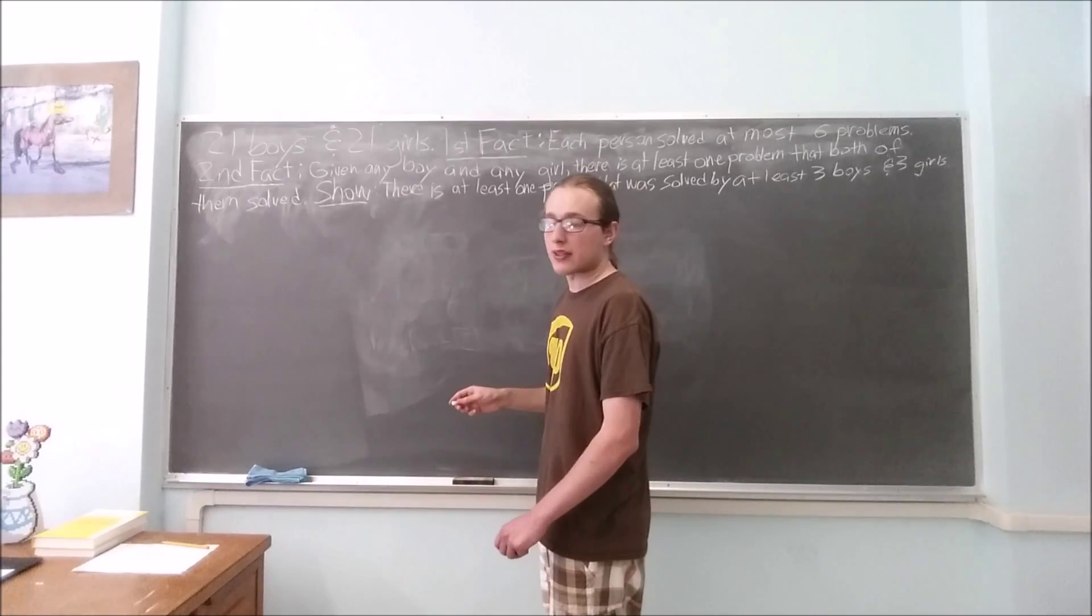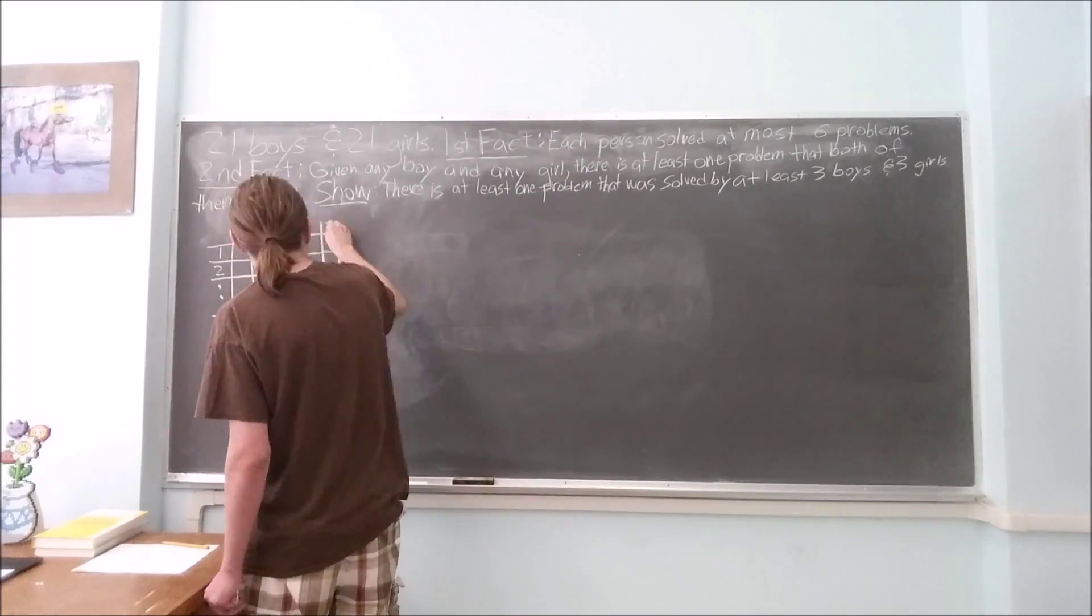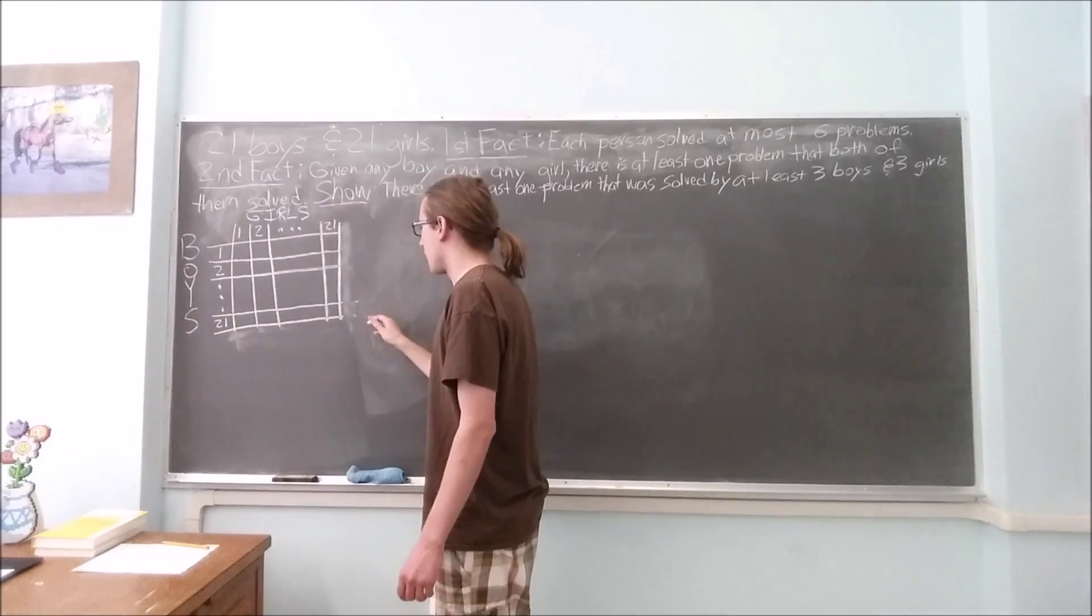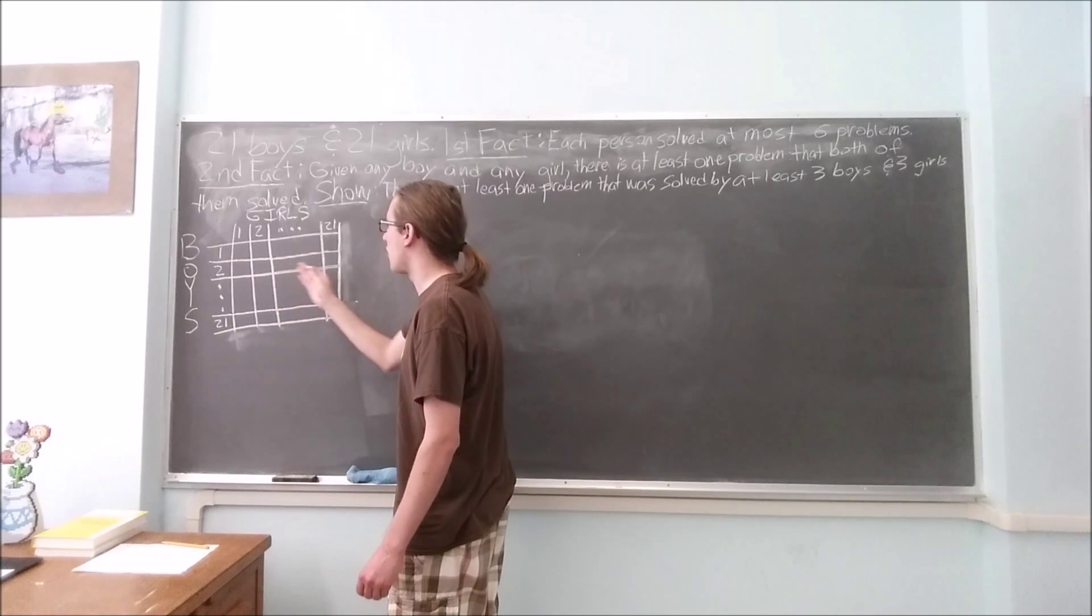Now I'm going to draw a chart that will help us. I have 21 rows, each row representing a boy, and 21 columns, each column representing a girl.